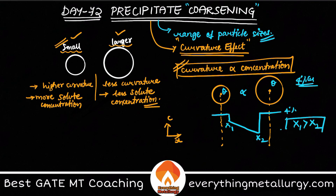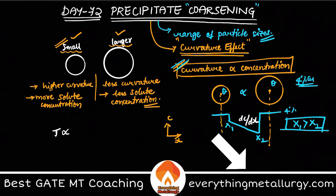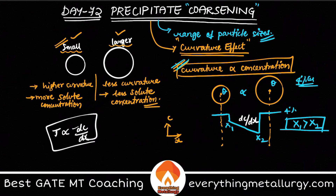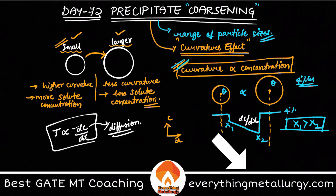This concentration gradient is generated because of the curvature effect. We can write this as dC/dx, and from Fick's law we know that flux J is proportional to dC/dx — of course with a negative sign. Because of this concentration gradient, diffusion takes place. The solute atoms jump from the smaller particle to the larger particle.